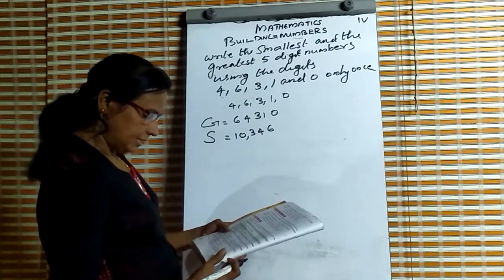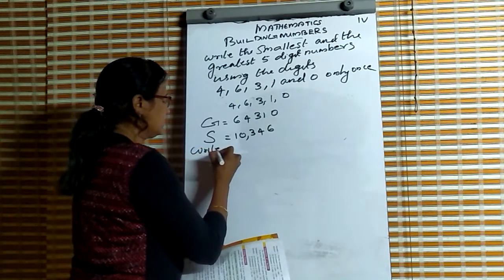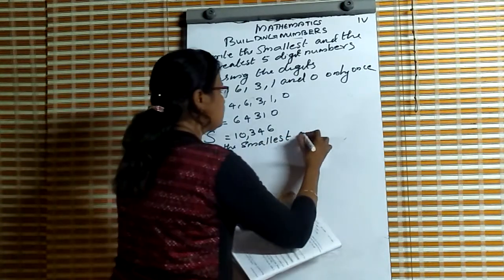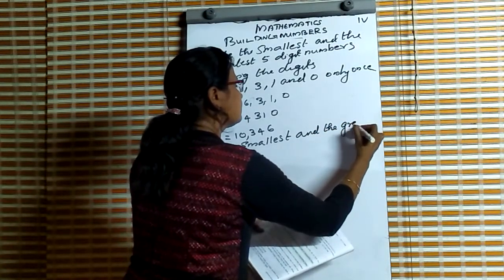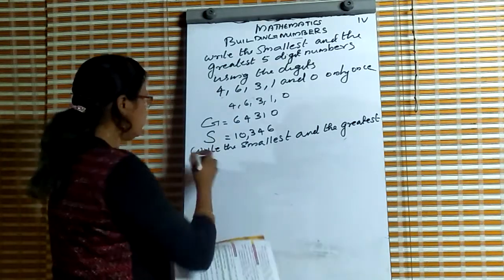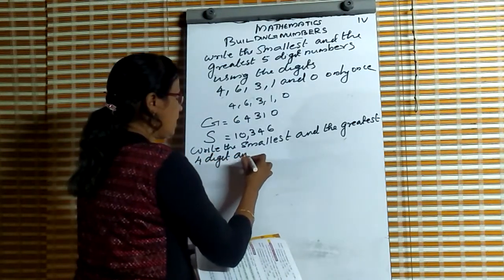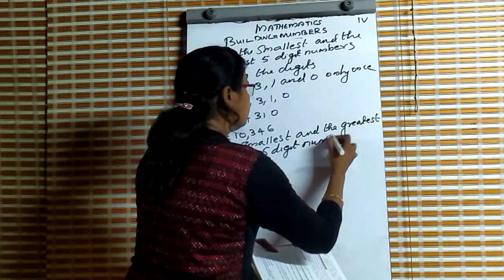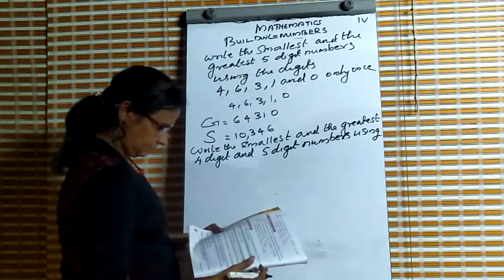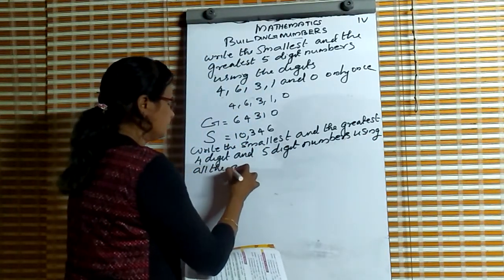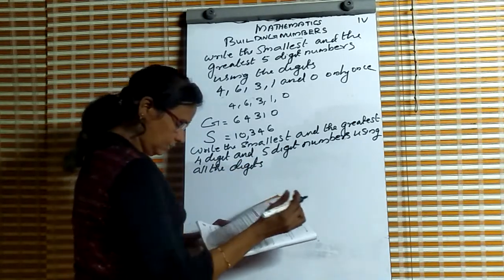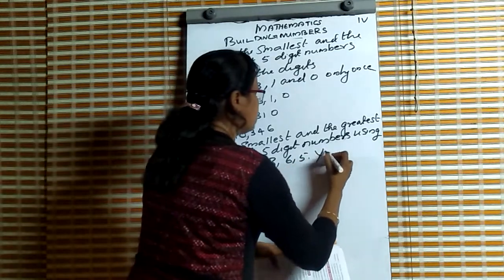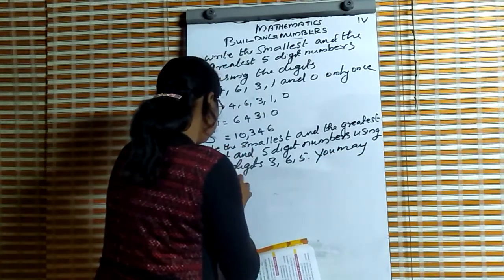Next question: write the smallest and the greatest 4-digit and 5-digit numbers using all the digits 3, 6, 5. You may repeat the digits.